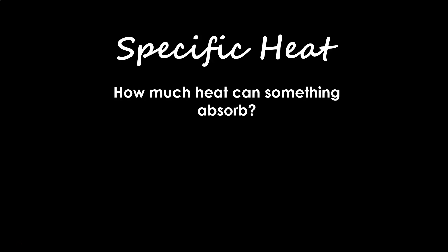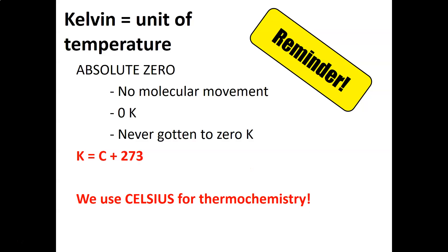Before we get into this lesson, I want to give you a little reminder about units of temperature. In science we are used to using Celsius, but there is a different unit called Kelvin which we sometimes use. We like Kelvin because it measures molecular movement in a more direct way than Celsius or Fahrenheit. At zero Kelvin, there is no molecular movement, which means we're never going to have a negative temperature — zero is as low as it gets.